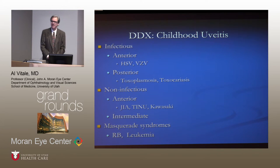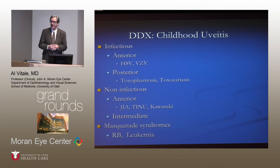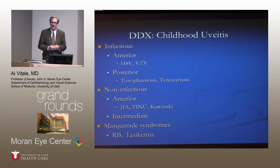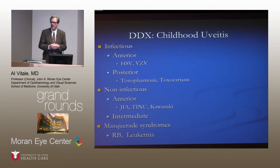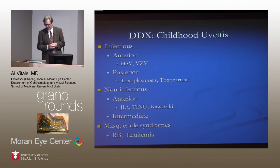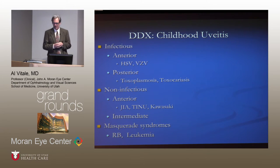We can think about the differential diagnosis in a simplistic but effective manner: infectious diseases, the most common in anterior uveitis being the herpes group of viruses; in posterior uveitis, toxoplasmosis is again the most common infectious etiology, but toxocariasis is another player seen in kids. For non-infectious diseases, the most common systemic association of anterior uveitis in children is juvenile idiopathic arthritis, followed by TINU (tubular interstitial nephritis and uveitis syndrome), and less common diseases such as Kawasaki's. Intermediate uveitis can represent up to 15 to 20 percent of pediatric uveitis cases. And of course, masquerade syndromes such as retinoblastoma or leukemia must be considered.